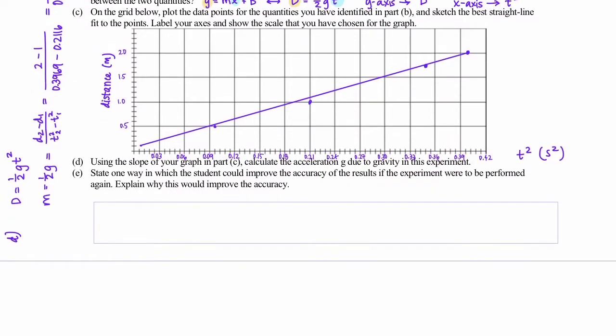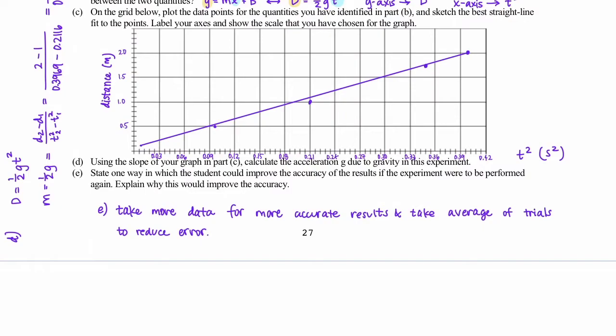So for part E, it says state one way in which the student could improve the accuracy of the results if the experiment were to be performed again. Explain why this would improve the accuracy. So what they're looking for here is for something along these lines: Take more data for more accurate results. And then the reason why you would want to take more data is because that would allow you to average the trials, which in turn will reduce the amount of error that your final answer has. Thank you guys.